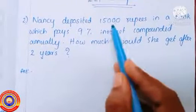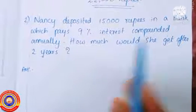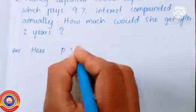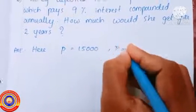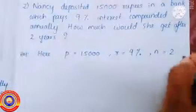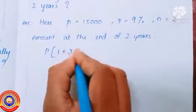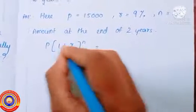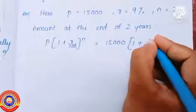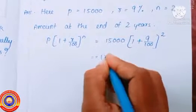Let's do one more question. Nancy deposited fifteen thousand rupees in a bank which pays nine percent interest compounded annually. How much would she get after two years? Here P is equal to fifteen thousand, r is equal to nine percent, and n is equal to two. The amount at the end of two years is P into one plus r by hundred, the whole raised to n. That is fifteen thousand into one plus nine by hundred, the whole raised to two.